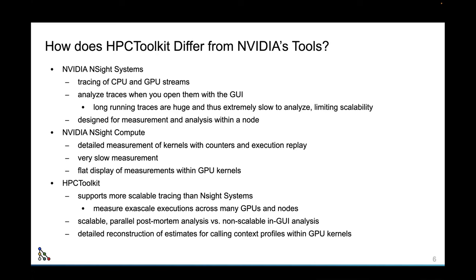With HPC Toolkit, we support much more scalable tracing than Nsight Systems. We've used it to measure 64,000 MPI ranks and 64K GPU tiles on Frontier, generating large-scale performance data — 20 minutes of measurement collected four terabytes of performance data — and we can analyze it relatively quickly and interactively display and navigate through the traces. HPC Toolkit supports scalable parallel post-mortem analysis, much faster than NVIDIA's GUI-based tools. We also support detailed reconstruction of calling context tree profiles within GPU kernels, which you'll see in the ArborX example.